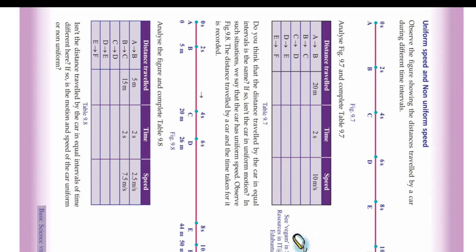Next, B to C: the same distance is travelled — 20 meters, time is 4 minus 2 = 2 seconds, so speed is 20 divided by 2 = 10 meters per second. Then C to D: again distance is 20 meters, time is 6 minus 4 = 2 seconds, so 20 divided by 2 = 10 meters per second.